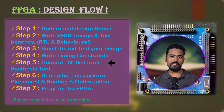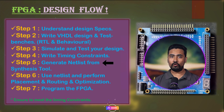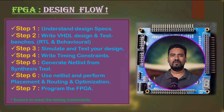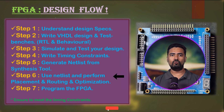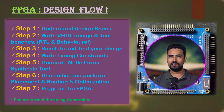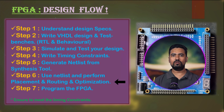After the synthesis process creates the blueprint or netlist of your design, it's time to translate that blueprint into a real hardware plan for the FPGA. This is where the implementation stage takes place. Here you tell the tool exactly which pins of the FPGA will be used for external connections like clocks, data inputs, and outputs. The implementation stage then takes the netlist, timing constraints, and pin information to perform three tasks: placement, routing, and optimization.